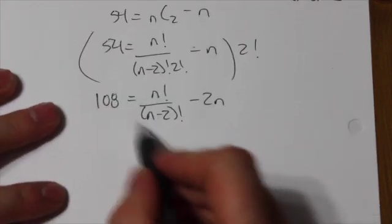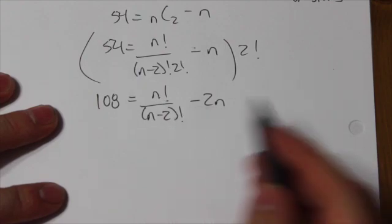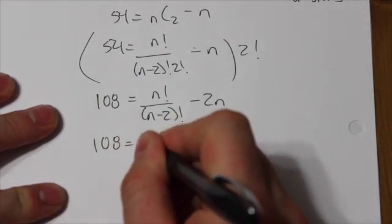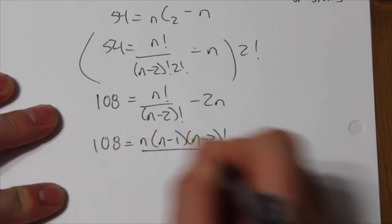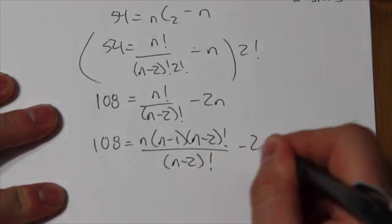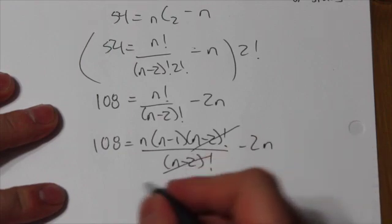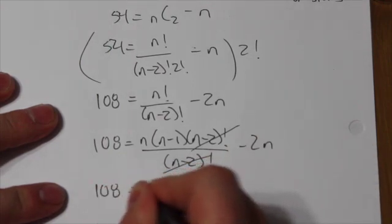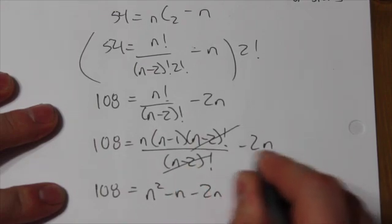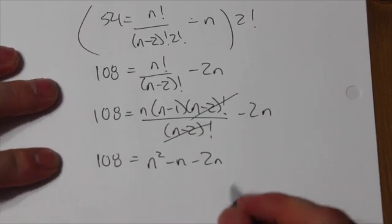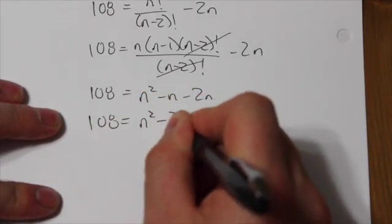Now I'm going to simplify the factorials here. n is larger than n minus 2, so that is going to end up being n times n minus 1 times n minus 2 factorial when I expand that out. The n minus 2 factorials divide out, and I am left with n squared minus n minus 2n, because that 2n that was left over, which tells me 108 is equal to n squared minus 3n.